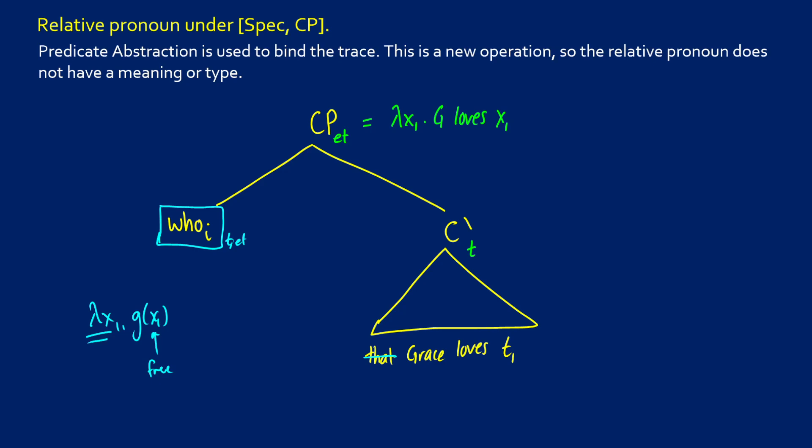So we can go from the C bar being true if and only if "G loves X1" to the CP level, where now what we're doing is removing the truth from it. We're introducing our abstraction on X1 so we can fill in that direct object. So this is called predicate abstraction. This is where it takes place in the tree. And this is what we need to write for it.